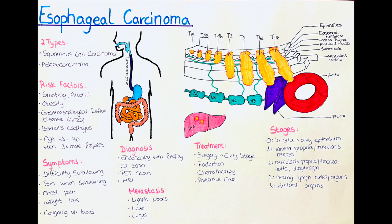Diagnosis of carcinoma of the esophagus involves several tests, including an endoscopy with biopsy, which involves the insertion of a thin flexible tube with a camera into the esophagus to take a tissue sample for examination. Imaging tests such as a CT scan and MRI scan may also be used to determine the extent of the cancer.